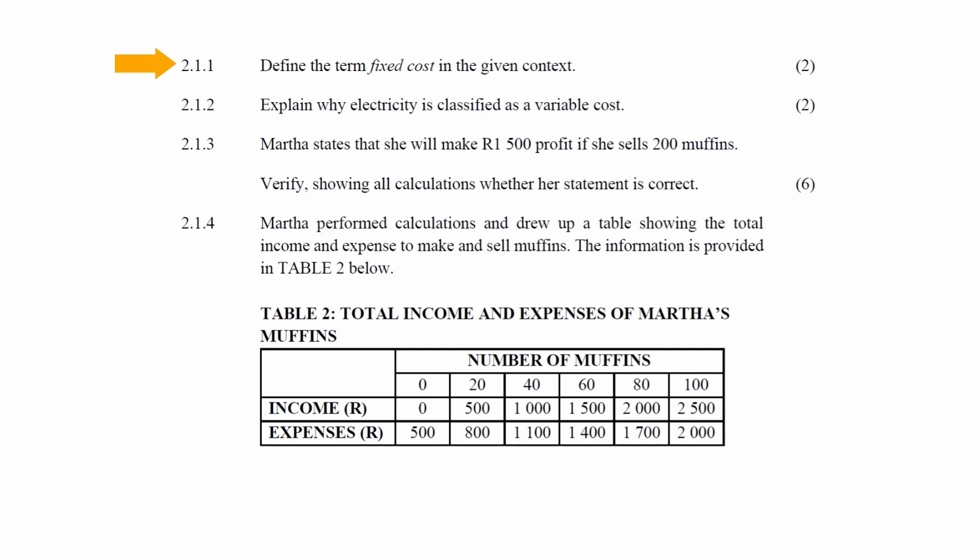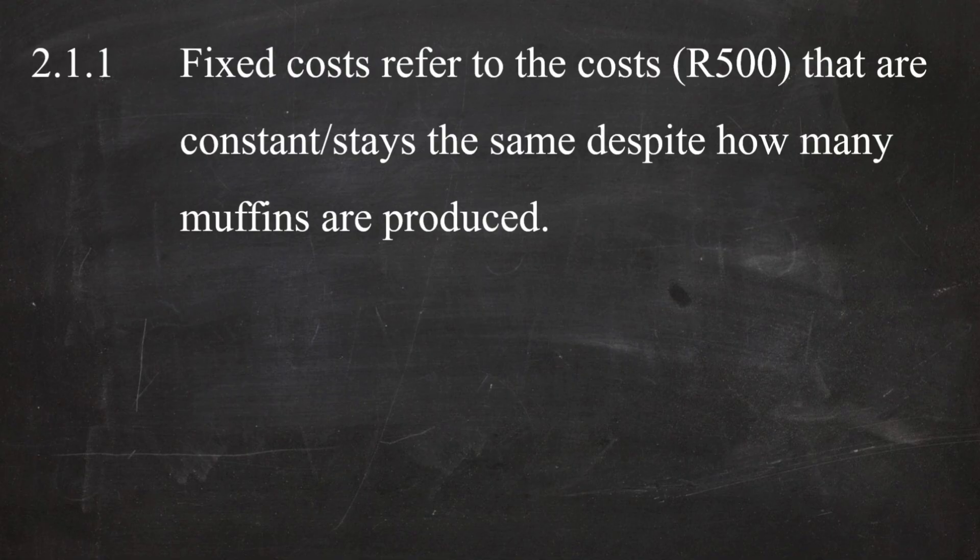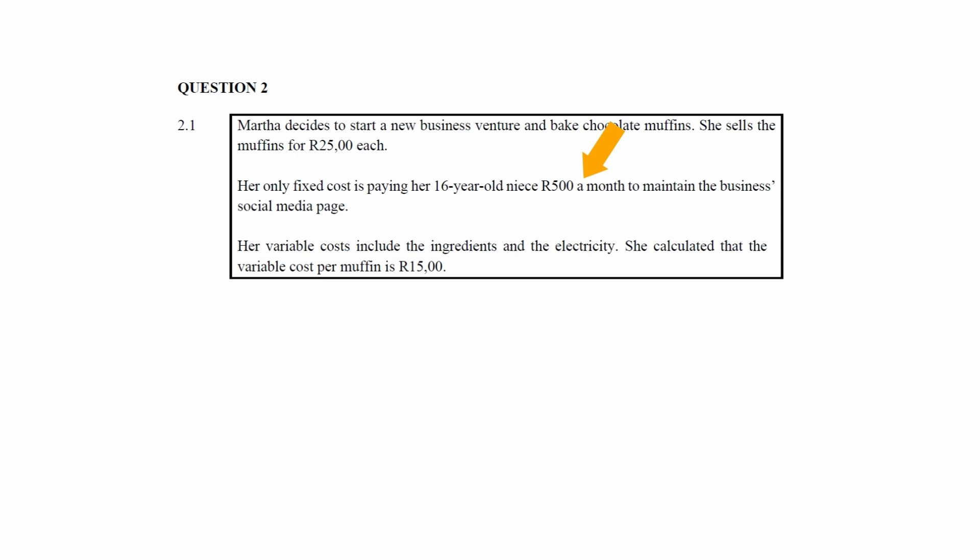In Question 2.1.1, you are instructed to define the term fixed cost in the given context. The 'given context' part is important — simply writing down the general definition of fixed cost won't get you the full marks. You have to define it in the context of this muffin business. A fixed cost is the cost that is constant or stays the same despite how many muffins are produced. In this context, it is the 500 Rand paid to her niece per month to maintain the social media page.